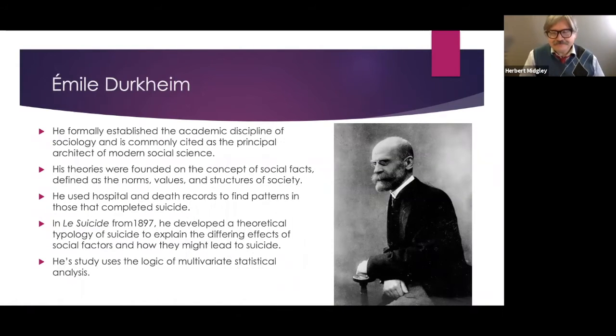So Emile Durkheim, my French isn't very good, but basically he wrote this book on suicide in 1897 and wanted to come up with a theoretical typology of suicide to explain the effects of social factors and how they might lead to suicide. This is one of the first times that available data was used for research. He used hospital and death records to find patterns of those that completed suicide. Those that attempted suicide and survived, you can interview them. But those that committed suicide, of course, you couldn't interview them. So the hospital would take records like height, male or female, what the jobs were, religion, those type of things. You have these statistics, what time of the year they committed suicide, what religion and work. He was able to come up with some theories, four theories of why this happened using available data.